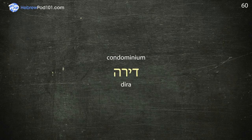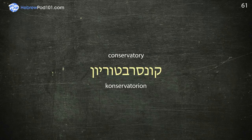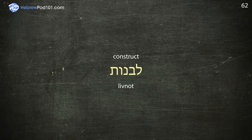Conservatory — Conservatorion. Construct — Livnot. Cook — Bishel.